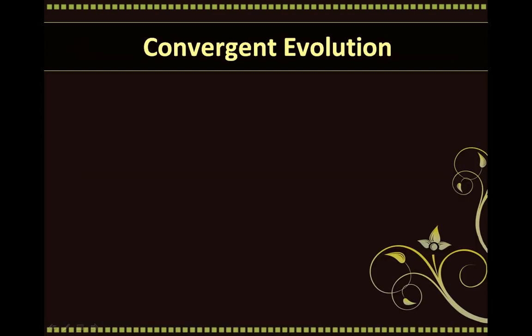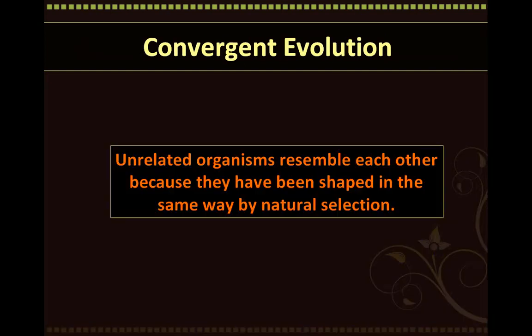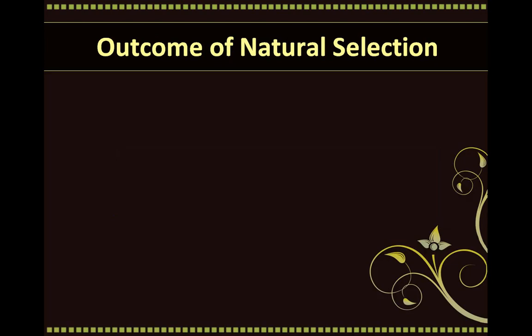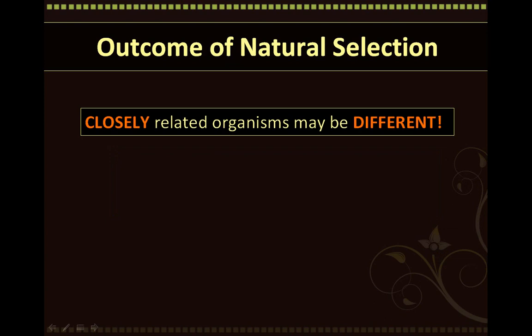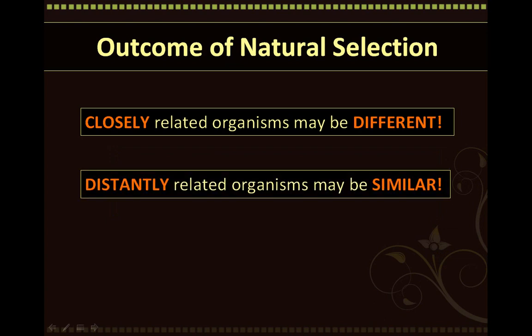In other words, due to convergent evolution, unrelated organisms can resemble each other because they have been shaped in the same way by natural selection. The outcome of natural selection is that closely related organisms can actually be different, and distantly related organisms can actually be similar. Sometimes organisms that appear very similar may only be distantly related, or sometimes organisms that are actually closely related may appear to be very different. This can contradict the predictions that we made using Darwin's first big idea.